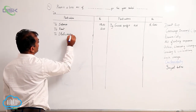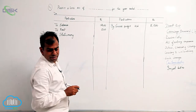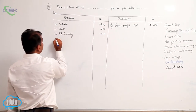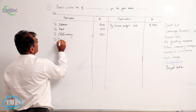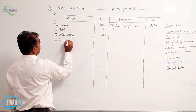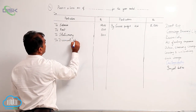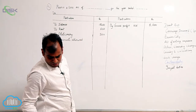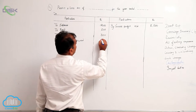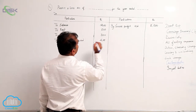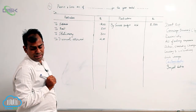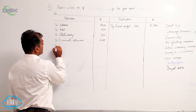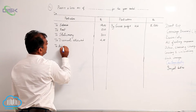Stationery is again an expense, so stationery goes on the debit side, amount being three hundred. Next, discount allowed — as you learned while doing the triple column cash book, discount allowed is a loss, so it goes on the debit side, amount being four hundred.